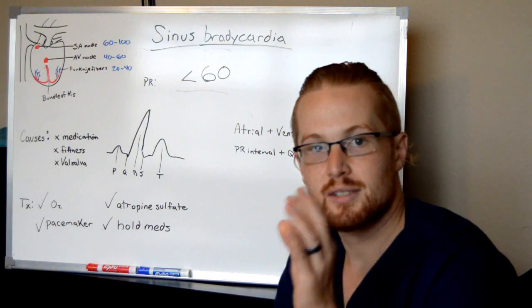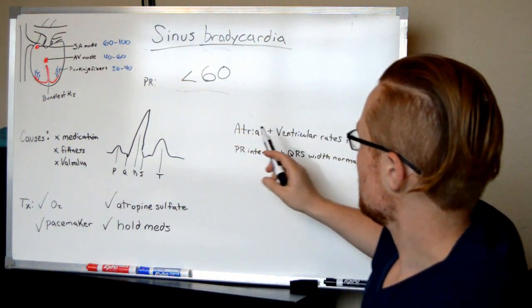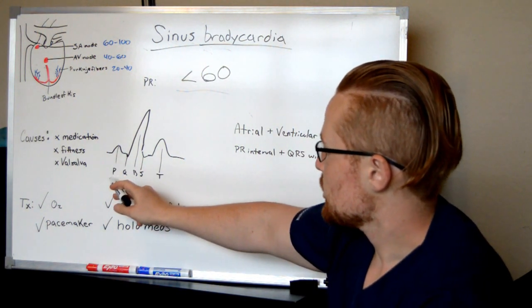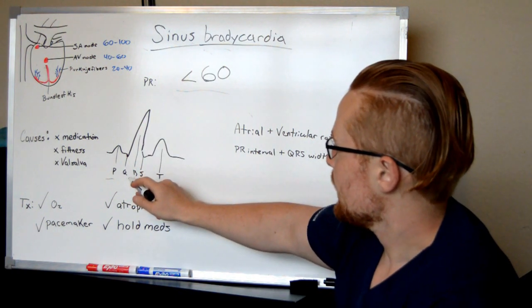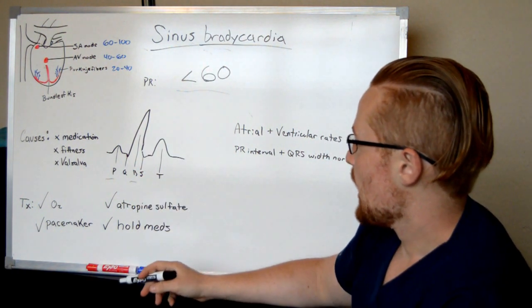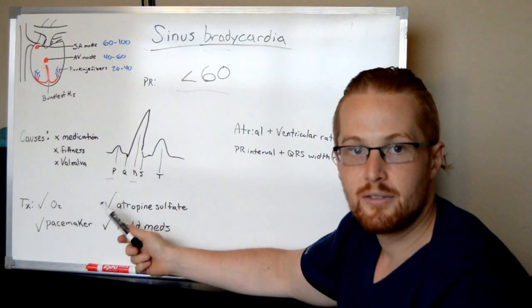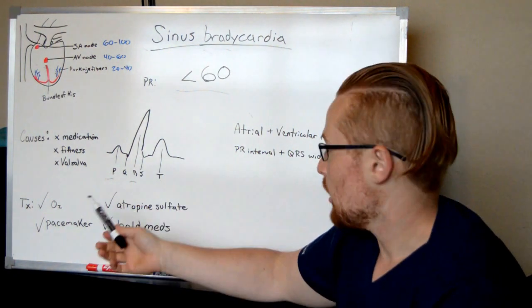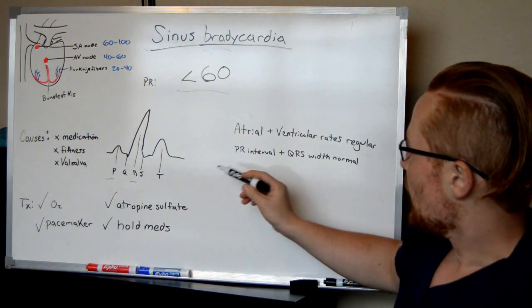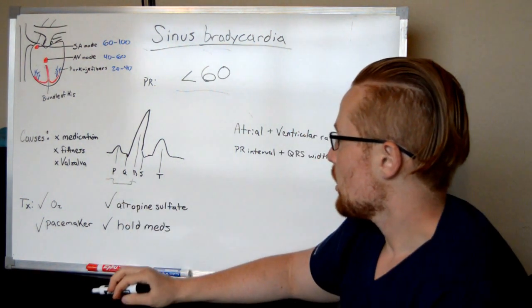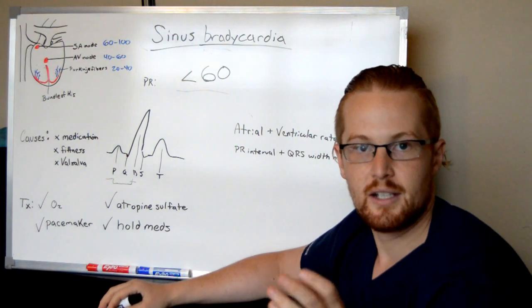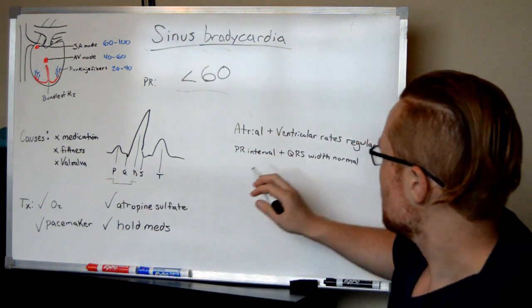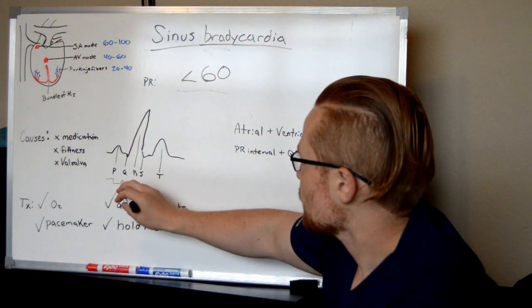It's still considered sinus rhythm and you can tell it's functioning effectively because the atrial and ventricular rates are regular. The P wave represents the atrium and the R wave represents the ventricles, so you're going to have an even number — no extra P waves or extra R waves. The QRS complexes will be an even amount, and the PR interval is going to be consistent, with no sudden changes in rate.